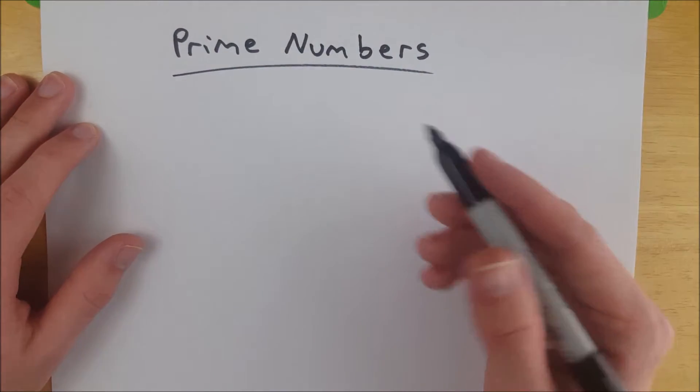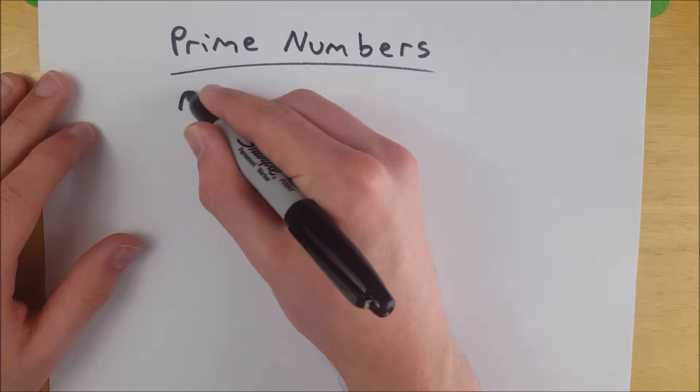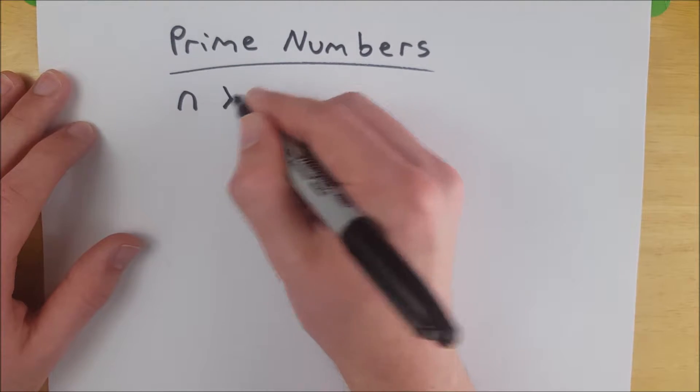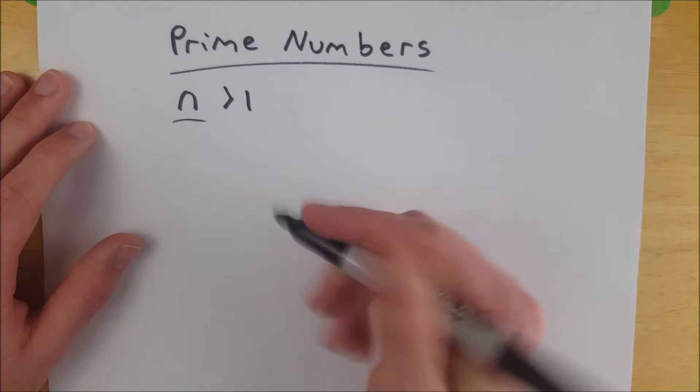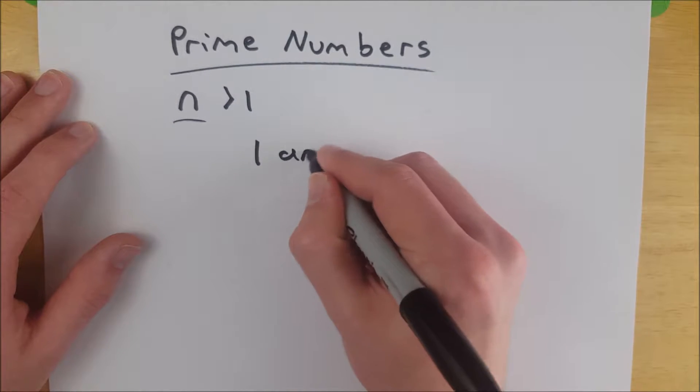So prime numbers are any number n greater than one such that the only numbers that divide n are one and n.